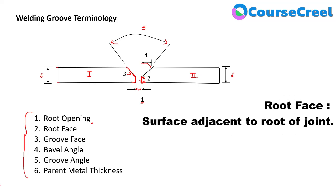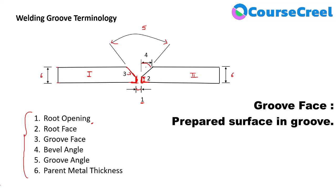Root face is defined as the surface adjacent to the root of the joint. This particular end is represented as the root, and the surface just adjacent to the root joint is defined as the root face. Groove face refers to this particular opening between the two components — it is the prepared surface in the groove, also called the prepared surface. The groove face is the surface where we need to fill the weld material.